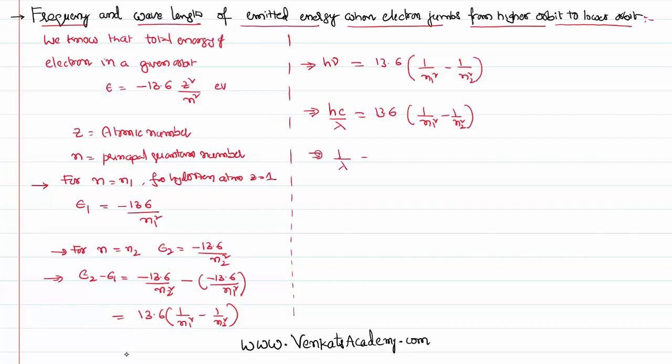That implies 1 by lambda can be written like 13.6 by hc times 1 by n1 square minus 1 by n2 square. This 1 by lambda is called wave number. If you know the lambda using a formula v equal to n lambda, we can also calculate frequency.